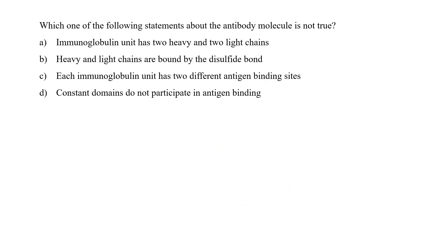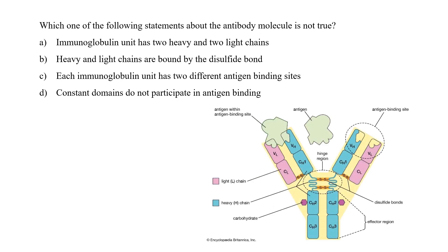Which one of the following statements about the antibody molecule is not true? Immunoglobulin has two heavy chains and two light chains. As we have just discussed, it is correct. Heavy and light chains are bound by disulfide bonds. This is also correct. You can see in the figure. Each immunoglobulin unit has two different antigen binding kinds. This is incorrect. Why? Because every antibody contains two antigen binding sites which can detect the same epitope, not different epitopes. So option C would be the one which is a wrong statement about antibodies.